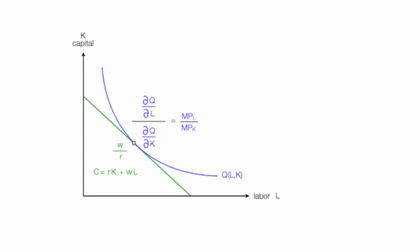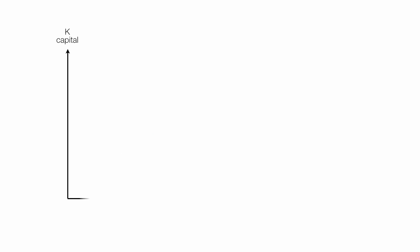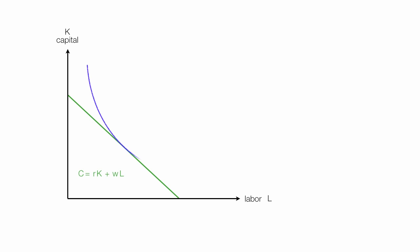In this tutorial, I'm going to show you the optimal level of production using calculus and the Lagrange multiplier. I start out putting capital on the y-axis and labor on the x-axis. I'll draw in the isocost line and the equation for it, and the isoquant line, which is a blue line. The optimal level of production is right there.